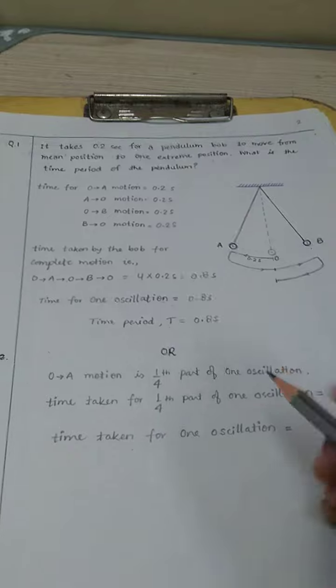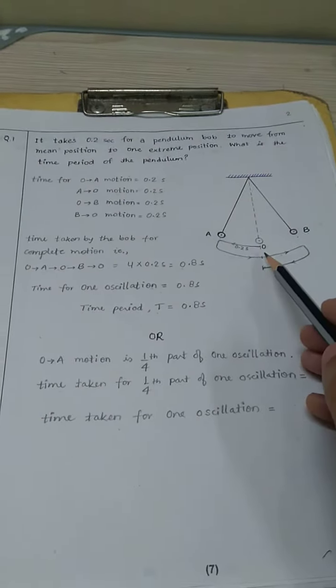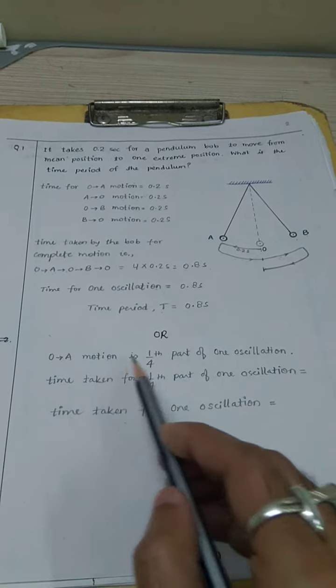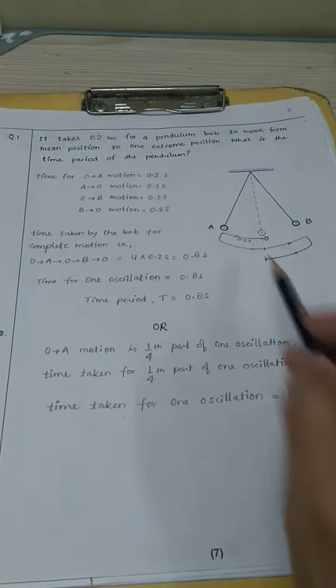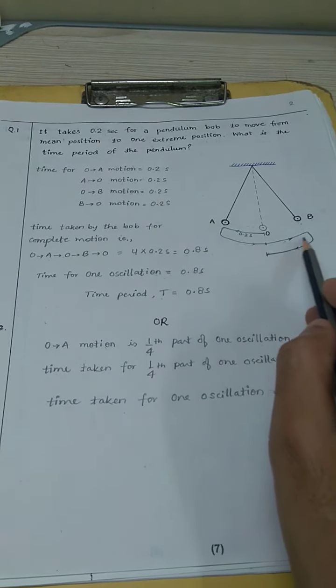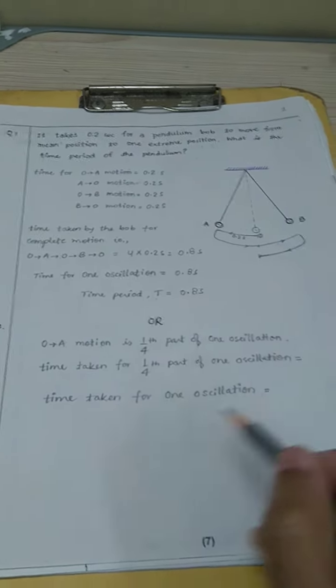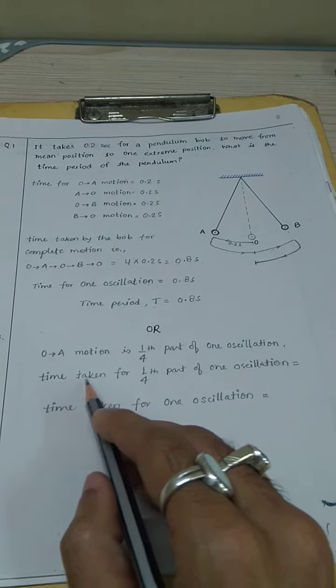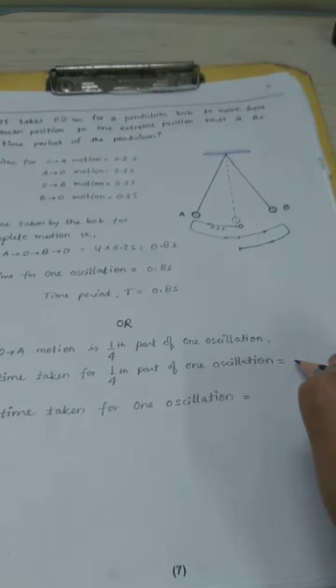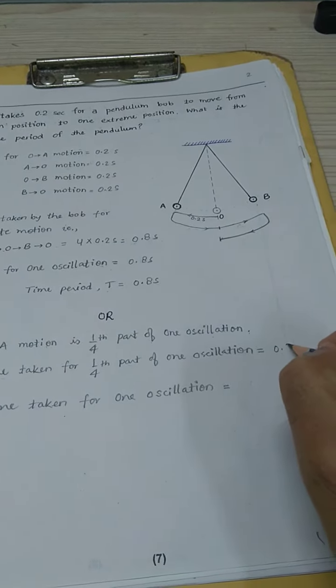Now there is another way to do this problem, that is O to A motion is one fourth part of one oscillation. So O to A, this part of the motion is one fourth of this complete oscillation. So the time taken for one fourth part of one oscillation is 0.2 seconds.